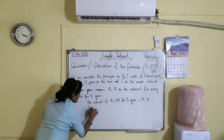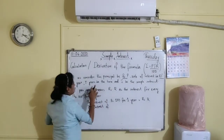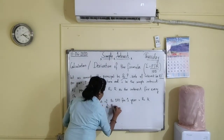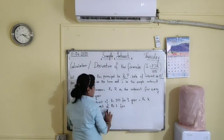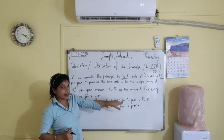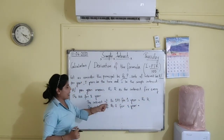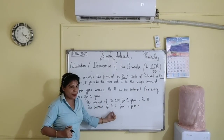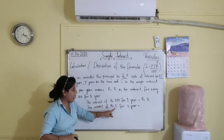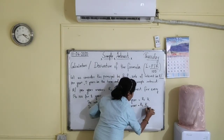Now we don't have rupees 100; we need to calculate the interest for rupees P. First, let us find the interest for rupees 1. Since we are going from 100 to 1, the interest will be less, so we divide by 100. The interest of rupees 1 for 1 year equals rupees R upon 100.